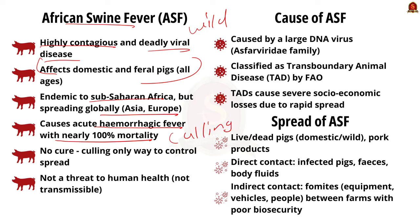Importantly, this virus cannot be spread from pigs to humans. African swine flu is caused by a large DNA virus of the Asfarviridae family. This disease comes under transboundary animal diseases, which the Food and Agriculture Organization defines as epidemic diseases that are highly contagious or transmissible, with potential for very rapid spread irrespective of national boundaries, and can cause serious socio-economic and possibly public health consequences.